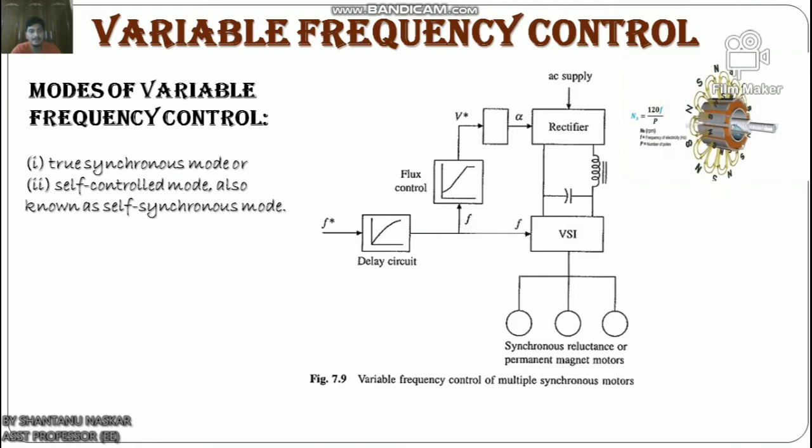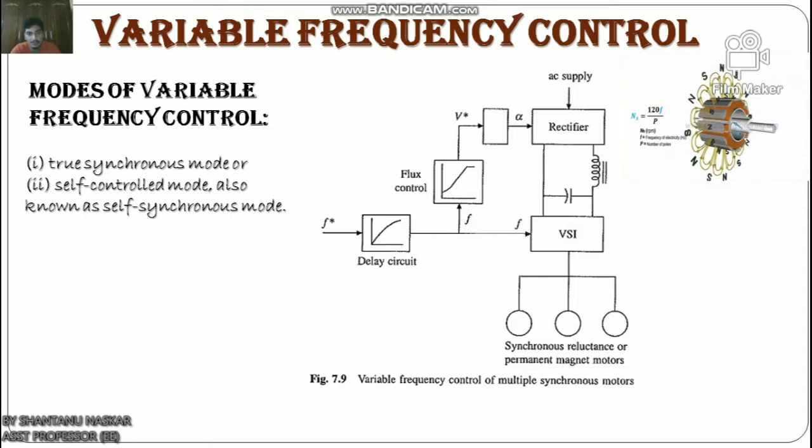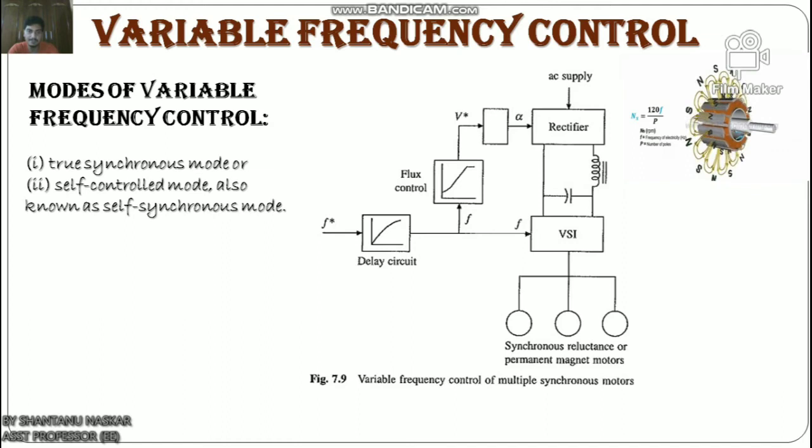Variable frequency control of multiple synchronous motors can not only allow speed control but can also be used for smooth starting and regenerative braking, as long as it is ensured that the changes in frequency are slow enough for the rotor to track changes in synchronous speed. A motor with damper winding is used to pull into synchronism.